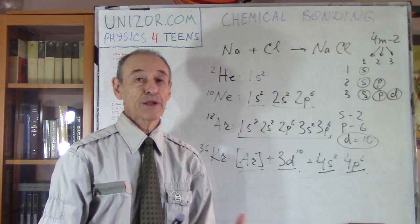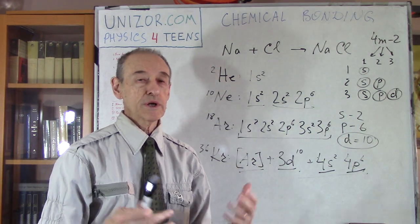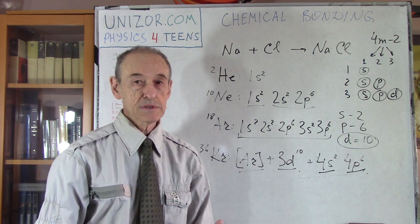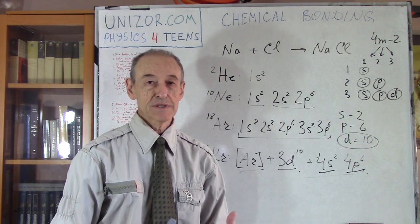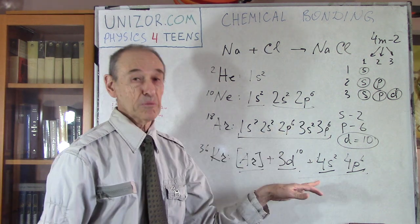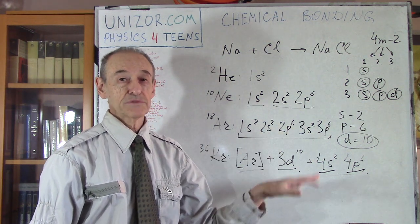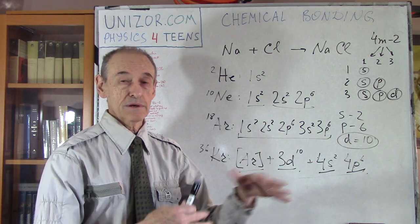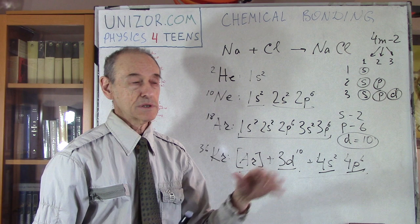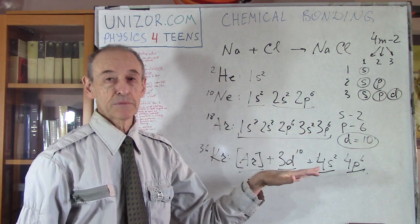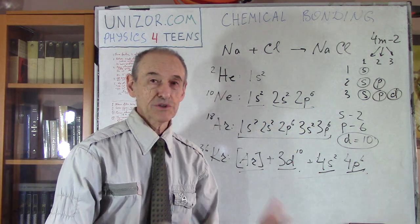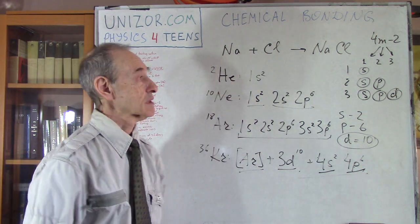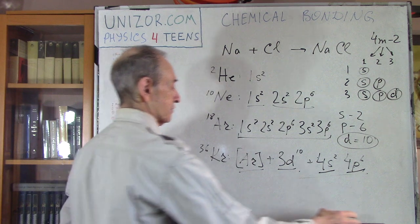Obviously, elements which do not have a complete topmost subshell — that is, one that is not filled to capacity — are more willing to get into combinations. And that's what will bring us to sodium chloride.